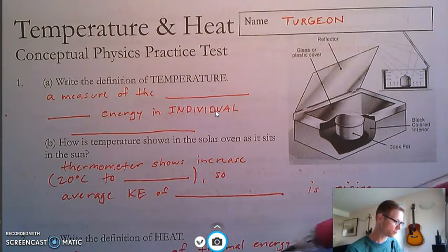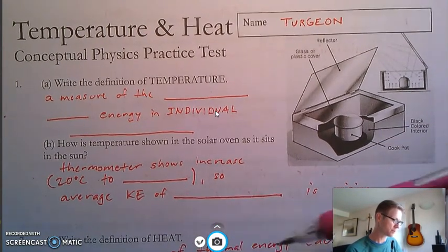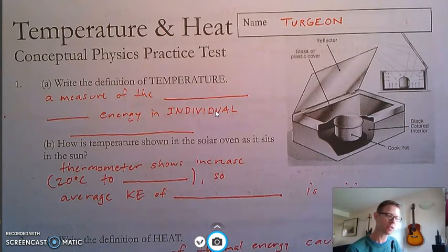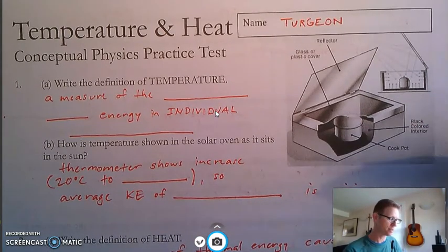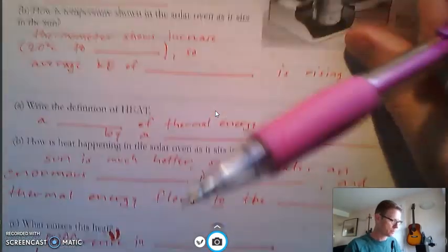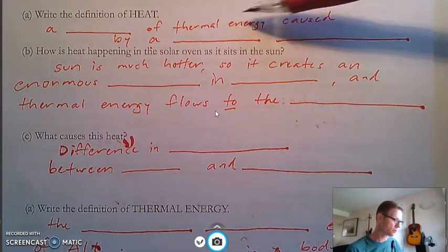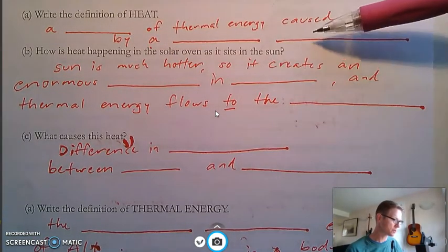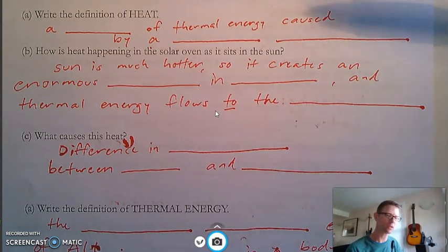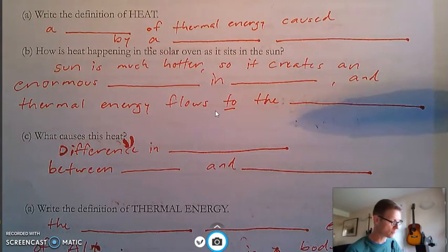Heat is a flow of thermal energy caused by a temperature difference. Temperature difference. Not a temperature change, a temperature difference. Heat is a flow of thermal energy caused by a temperature difference. Remember, heat is a flow. It's like an active thing in its energy, whereas temperature is not an active flow or anything like that.